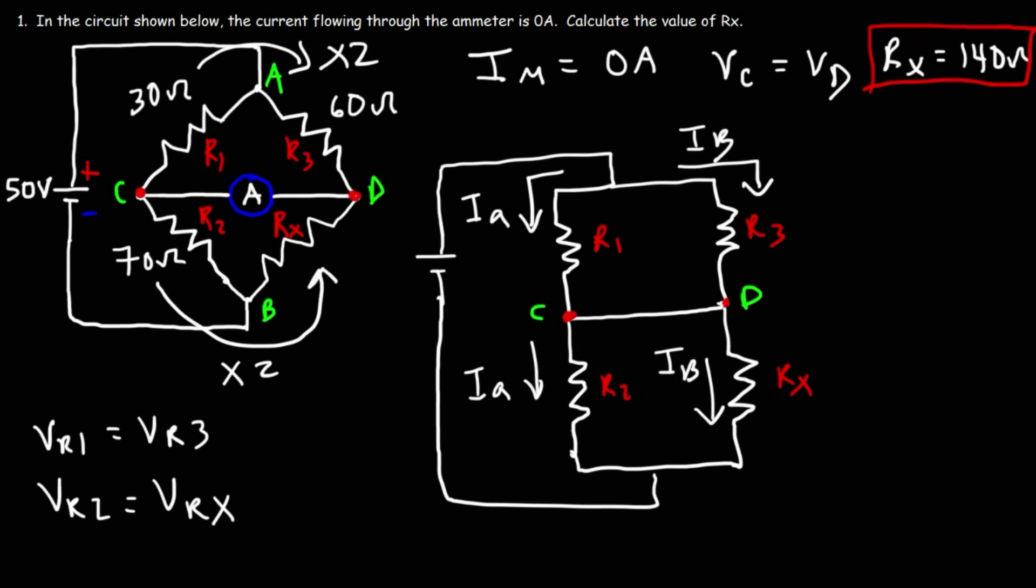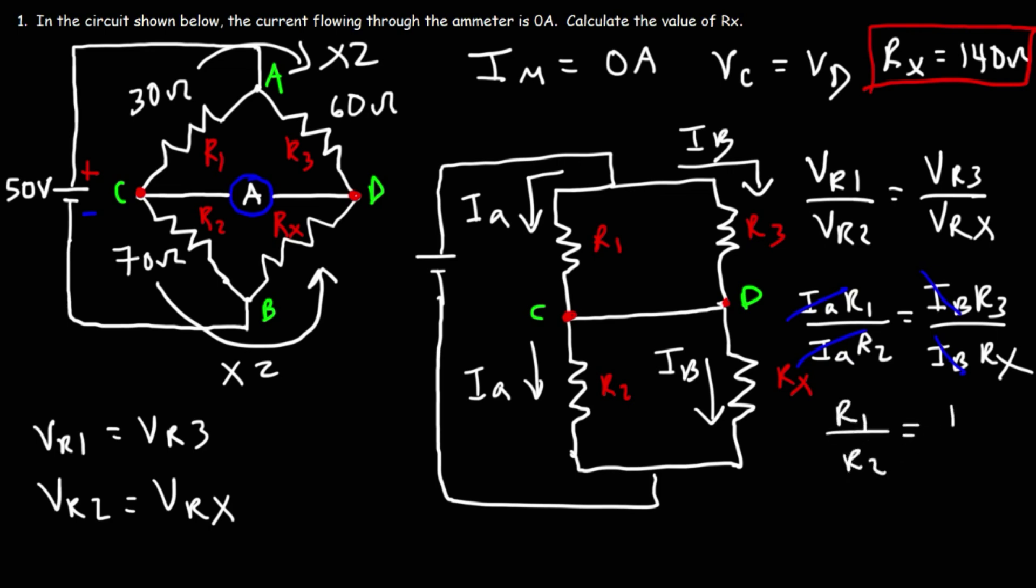So what we're going to do now is take a ratio of two voltages. We're going to write Vr1 over Vr2. Now we know that Vr1 is equal to Vr3 and Vr2 is equal to Vrx. Now the reason why I chose to divide Vr1 by Vr2 is because they share the same current. The voltage across R1 is equal to the current that flows through it times R1 itself, according to Ohm's law. So Vr1 can be replaced with Ia times R1. Vr2 is Ia times R2. Now Vr3, that's going to be Ib times R3. Vrx is going to be Ib times Rx. So we could cancel Ia, and we can cancel Ib. So we're left with this expression: R1 over R2 is equal to R3 over Rx.